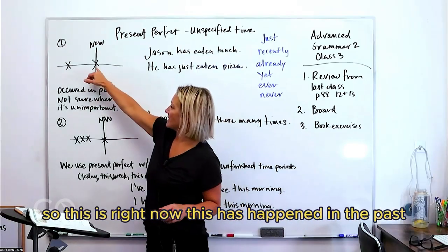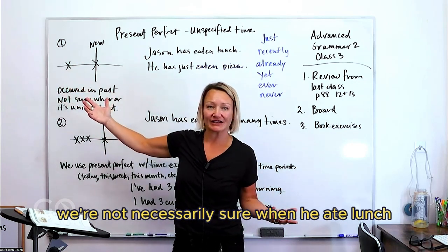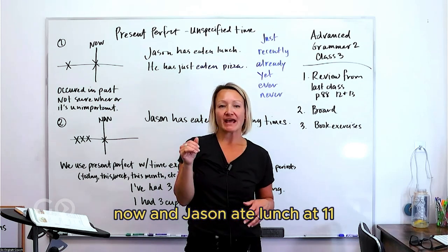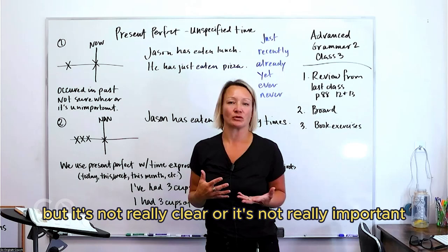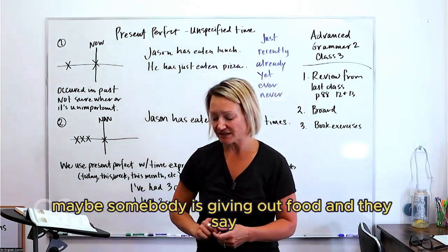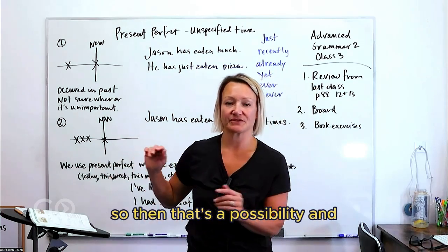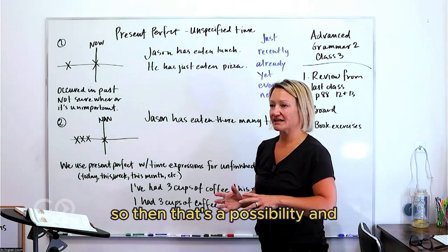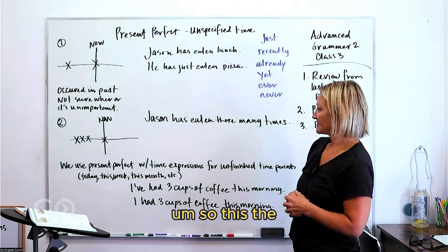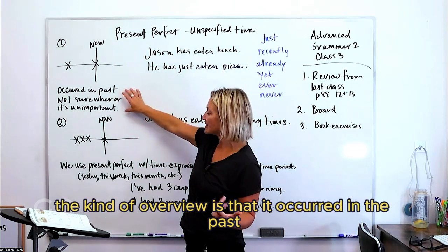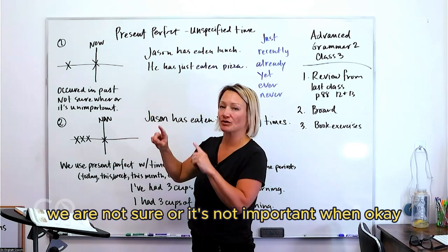So 'Jason has eaten lunch' — that happened in the past and relates to right now. We're not necessarily sure when he ate lunch. Maybe it's 2 o'clock right now and Jason ate at 11, but it's not really clear or important. Maybe somebody is giving out food and they say, 'Oh no, Jason has eaten lunch already.' When he ate is not important. The overview is: it occurred in the past and we're not sure — or it's not important — exactly when.